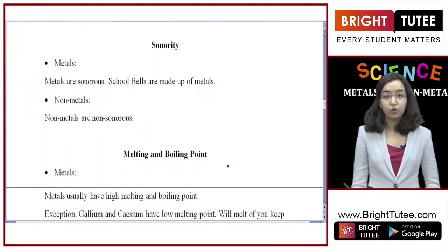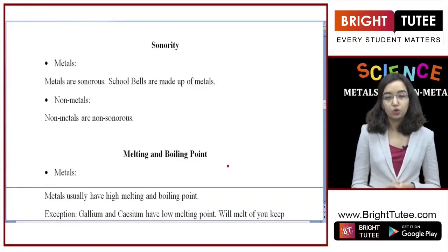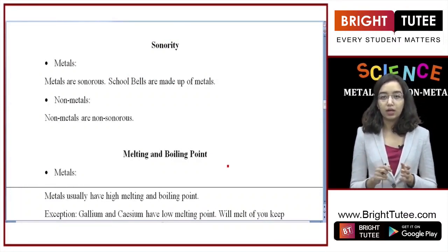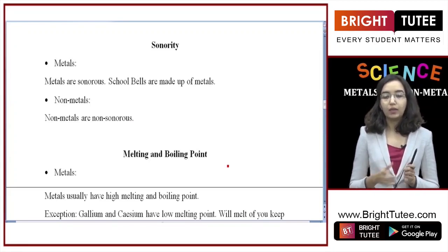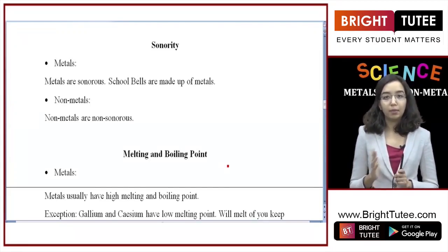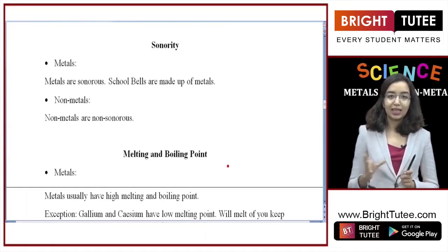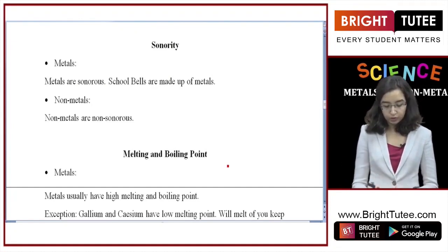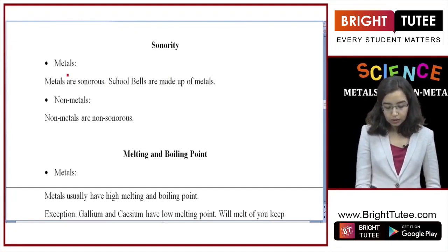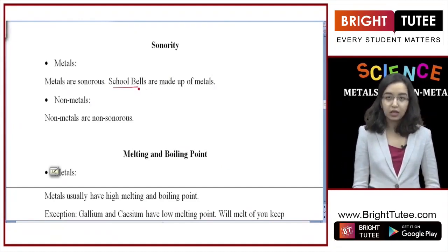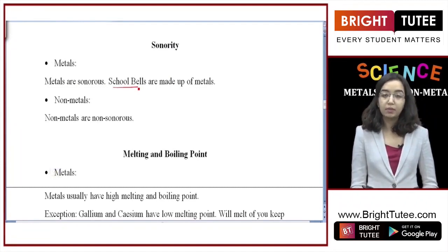The next property is sonority. Metals are sonorous, which means that when struck with another piece they create a ringing noise. As you have seen with the bells in your school, when the metal piece gets hit it produces a ringing noise because metals are sonorous. Because of this property, metals are also used to make school bells. Nonmetals on the other hand are non-sonorous.